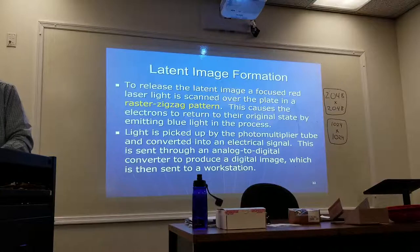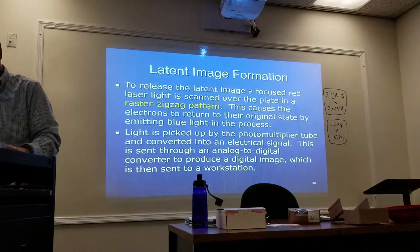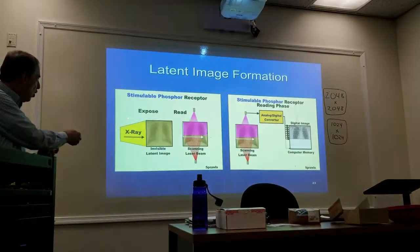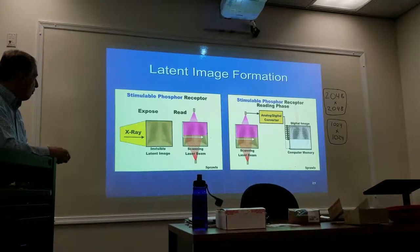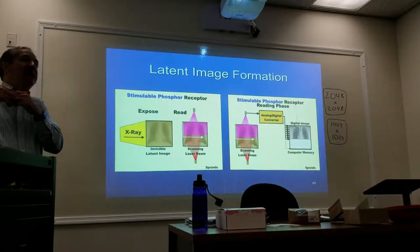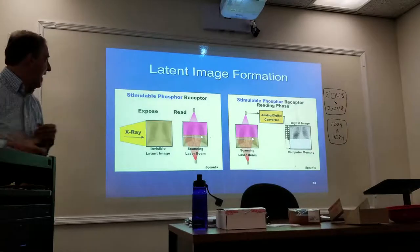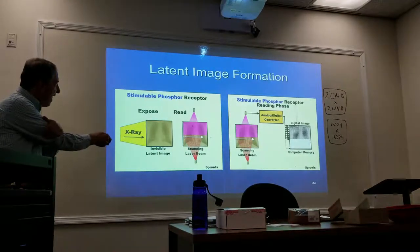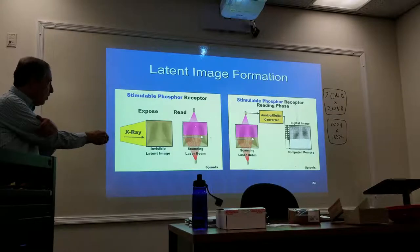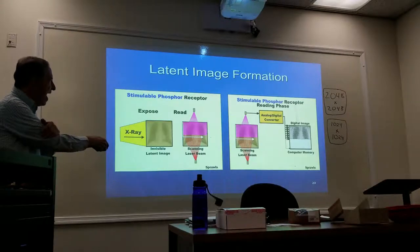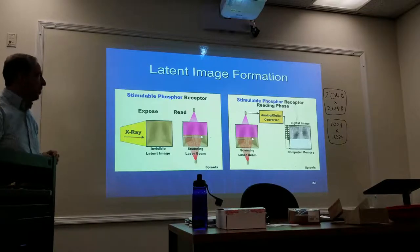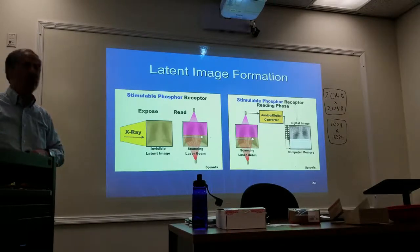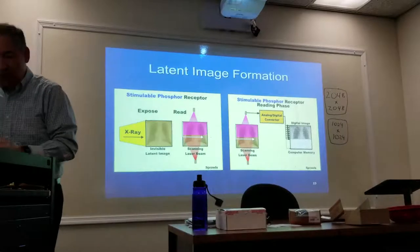This causes the electrons, because they're in that metastable state, to come back to their original state by emitting light — that's the signal. The light is picked up by the photomultiplier tube and converted into an electrical signal. So: x-rays strike the photostimulable plate, creating a latent image; the red light goes in that raster zigzag pattern, the image appears, it goes through the analog-to-digital converter, and now you have your visual image.